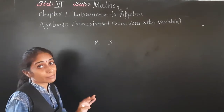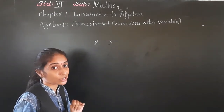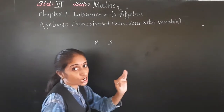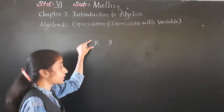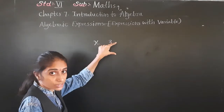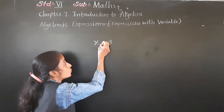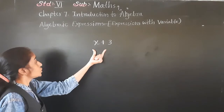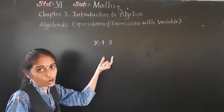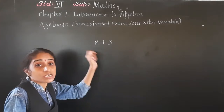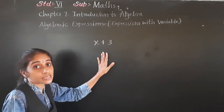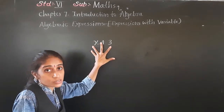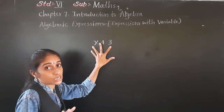The basic mathematical operations are addition, subtraction, multiplication, and division. If I put one variable and one constant together with four basic operations, for example x plus three, this is an algebraic expression.